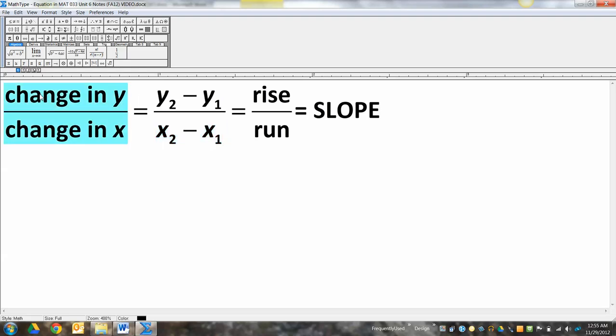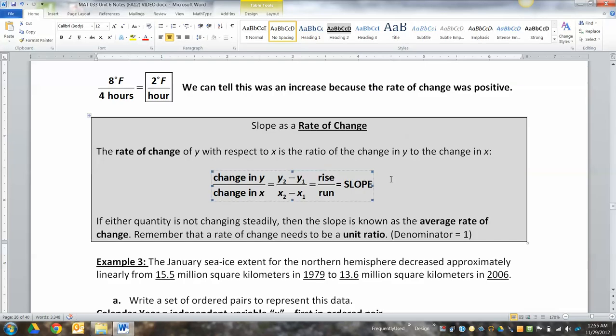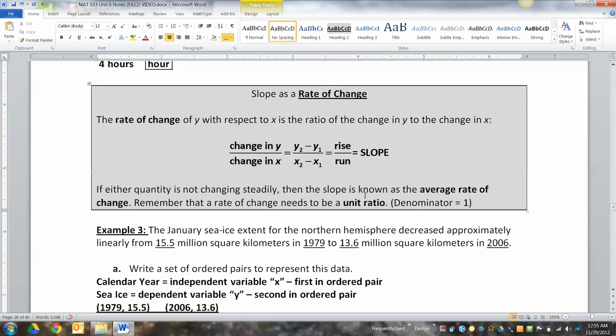But what's that mean? If it's change in y over change in x, that means that it's a rate of change. It's a speed. Your slope literally is telling you how fast things are changing, right? So when you calculate slope, you're calculating something else, more or less.